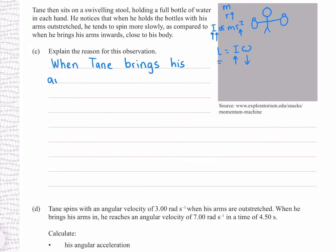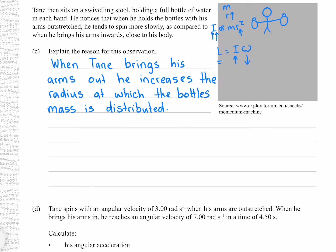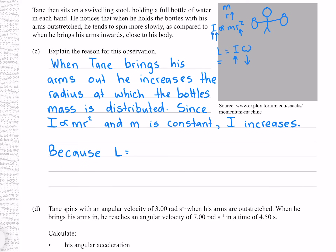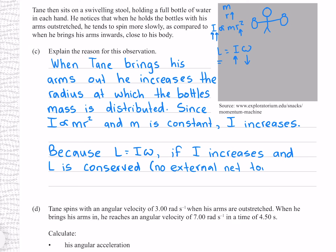Written answer: When Tane brings his arms out, he increases the radius at which the bottles' mass is distributed. Since I is proportional to mr² and m is constant, I increases. Because L equals Iω, if I increases and L is conserved (no external net torque), omega must decrease.